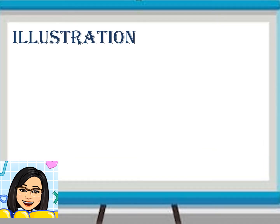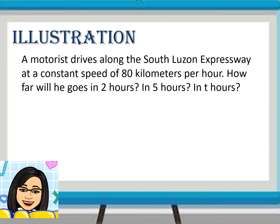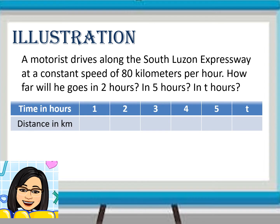Let us illustrate direct variation using this situation. A motorist drives along the South Luzon Expressway at a constant speed of 80 km per hour. How far will he go in 2 hours, in 5 hours, and in 3 hours? Let us put the situation in a table. Observe — the quantities being compared are time, in hours, and distance, in kilometers.